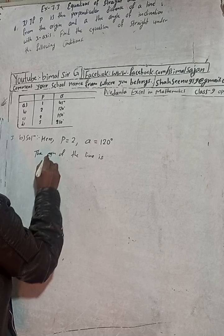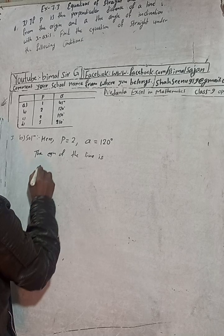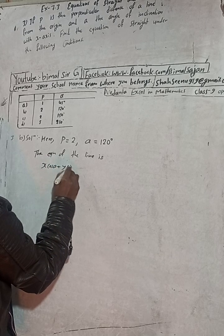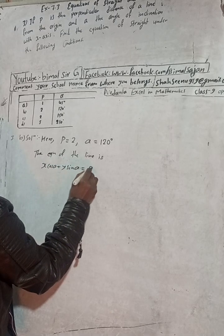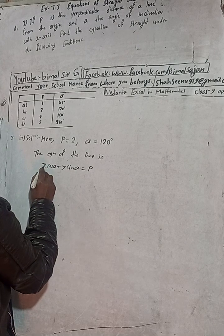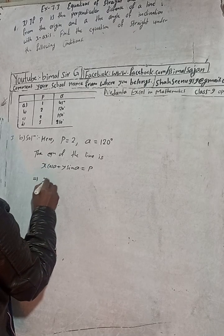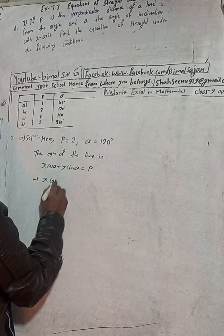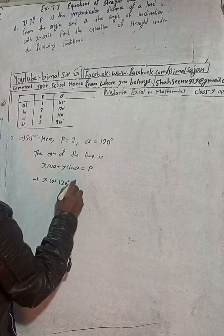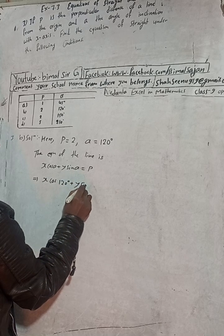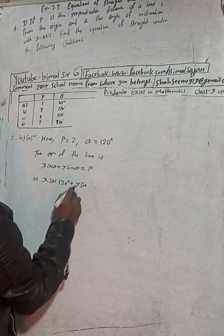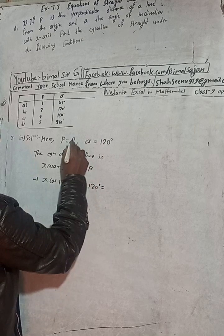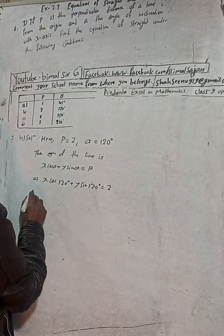The equation of the line is x·cos α + y·sin α = P. We substitute the values: x·cos 120° + y·sin 120° = 2, putting P = 2.